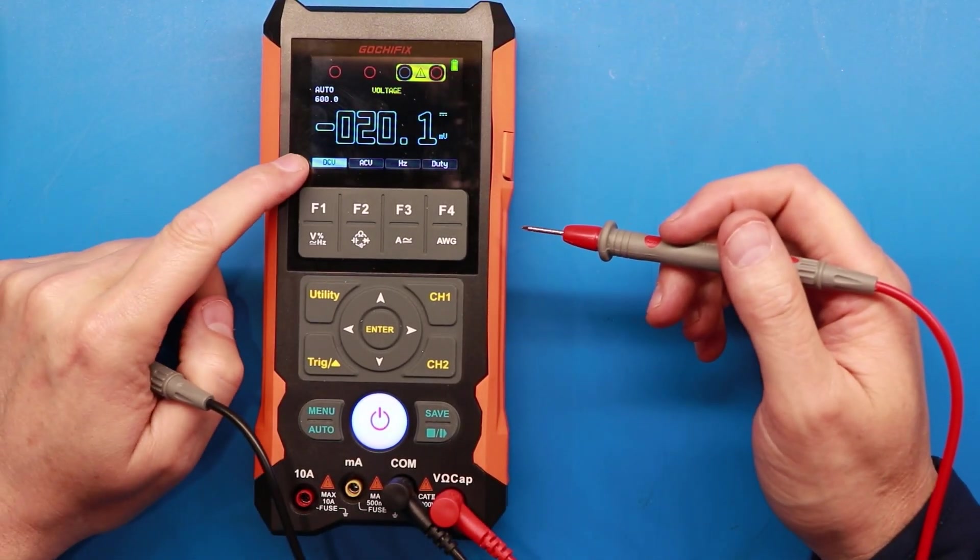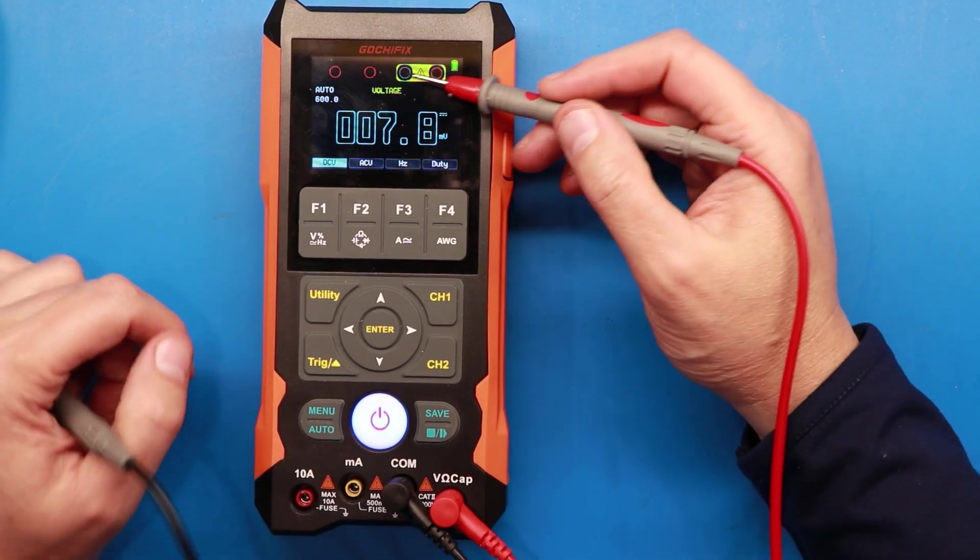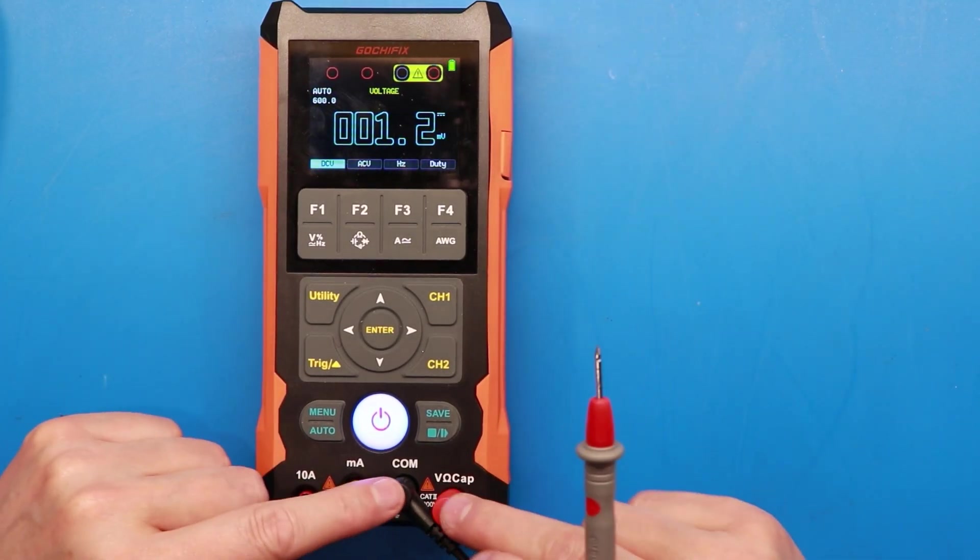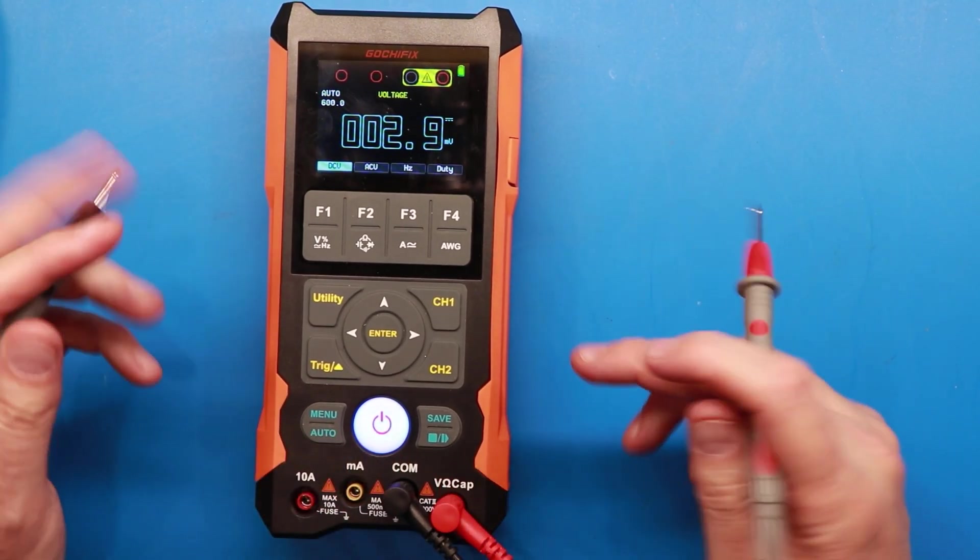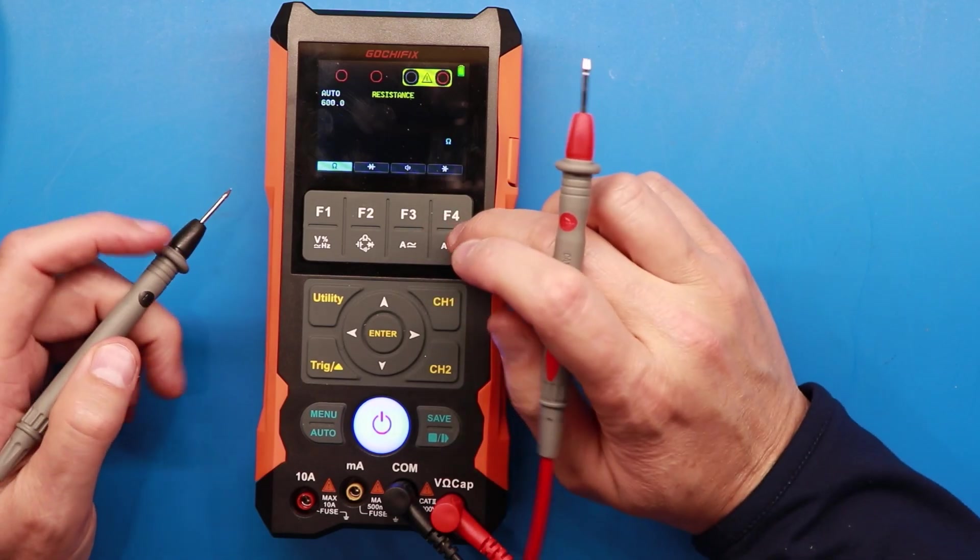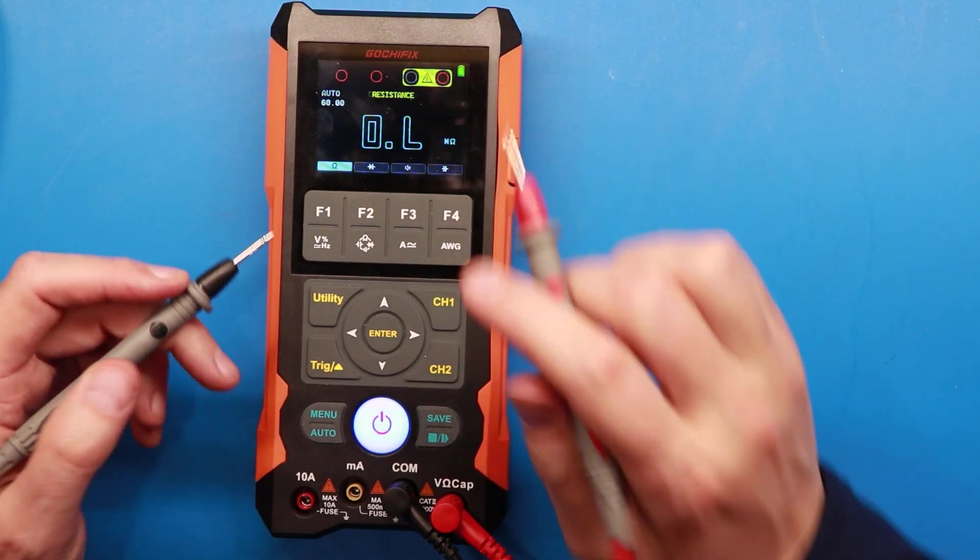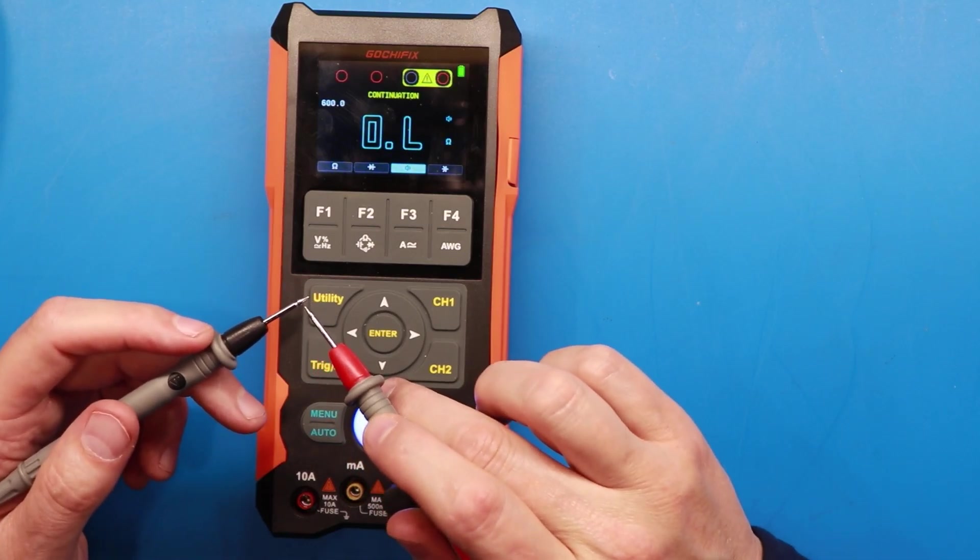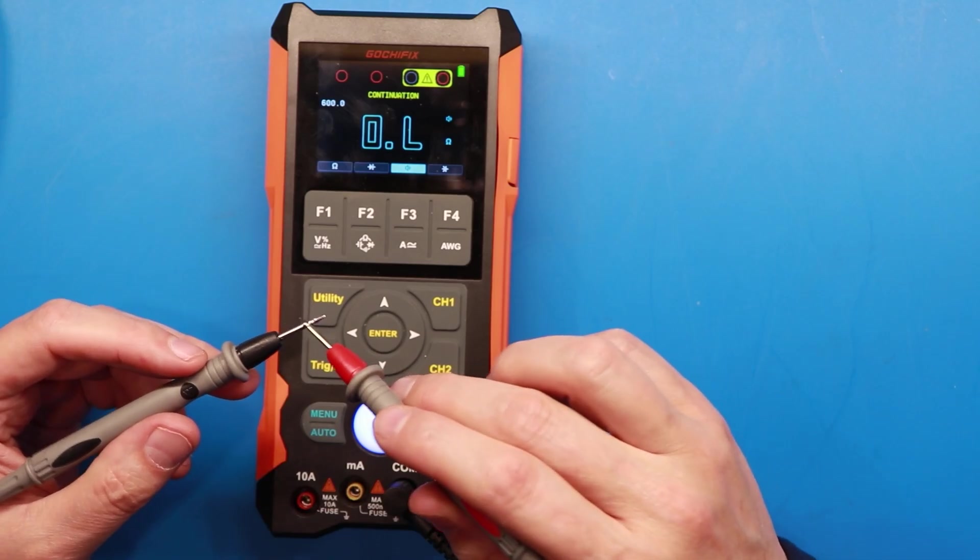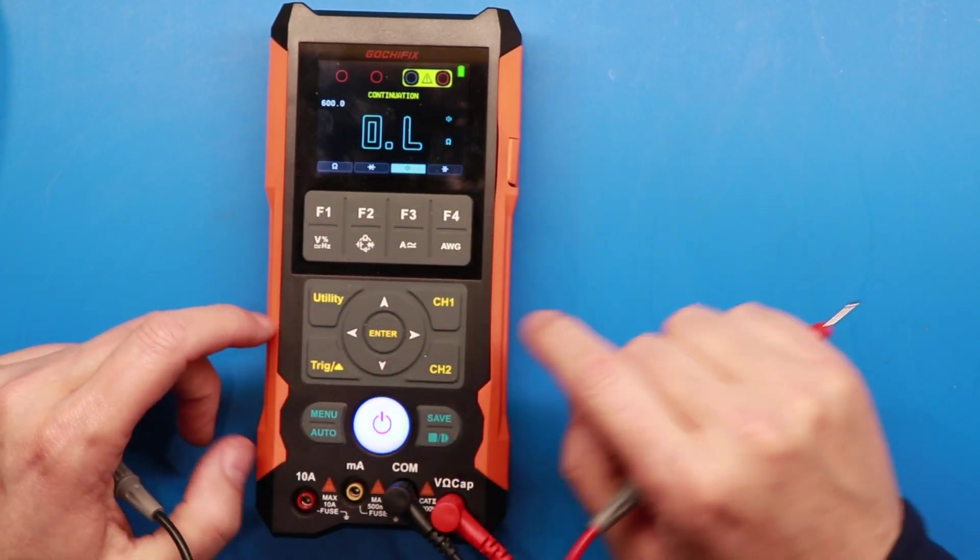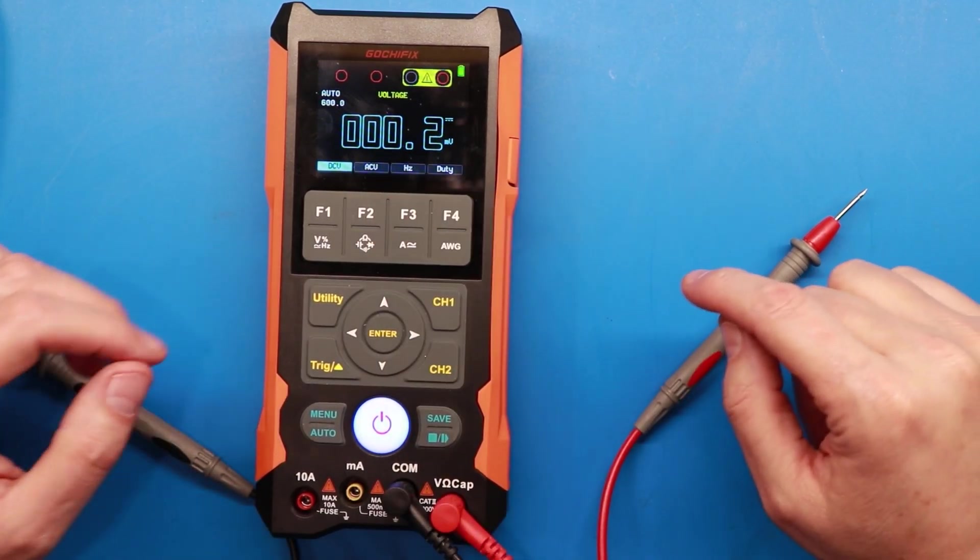Right now it boots up in DC voltage reading and if you'll notice it tells you up here highlighted in yellow the two plugs down here that you should be connected to to take a measurement here. I'm going to flip over here to like continuity beep. Quick beep. I've seen some units that the beeps not super quick. This one's good.